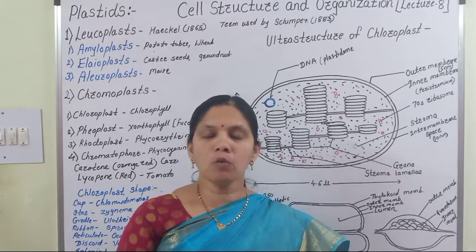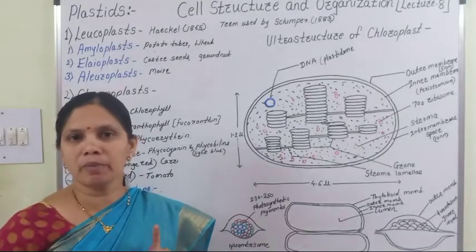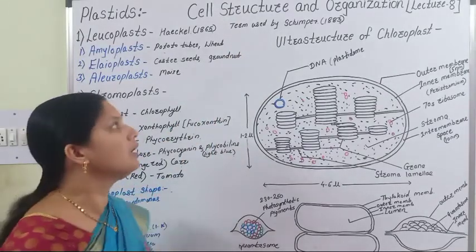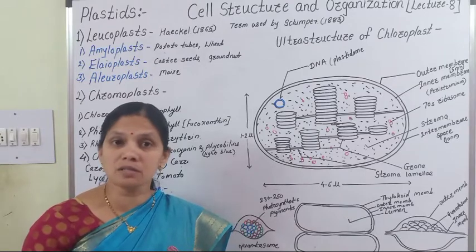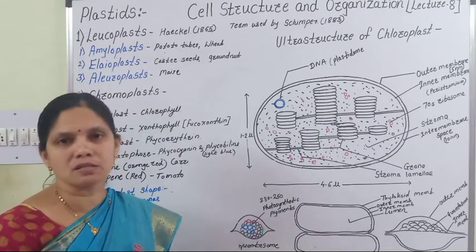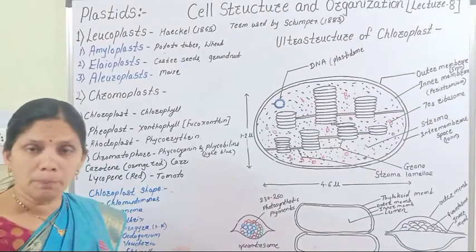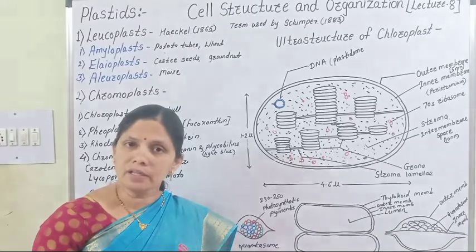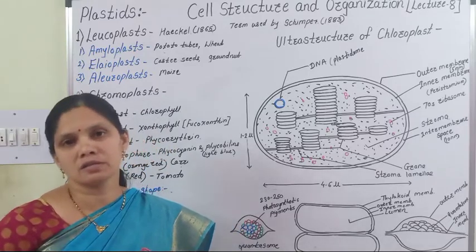Plastids are membrane-bound cell organelles which are present in plant cells. Plastids were discovered by the scientist Haeckel in 1865, and the term 'Plastid' was coined by Schimper in 1883. These plastids are the largest cell organelles and contain DNA, RNA, and 70S type of ribosomes.